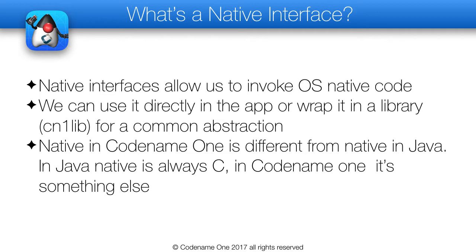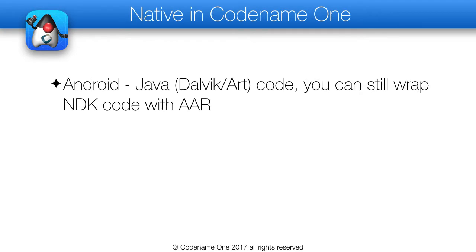When we say native in Codename 1 we mean something technically very different from the standard Java definition of native. We mean use the platform's natural language. So when we are on Android and we invoke a native interface, we will go into Java code but it will be separate code where we can use the full Android API and third-party libraries. That code will only execute on Android, so you can use anything you want, including the native development kit which allows you to get all the way into C code.